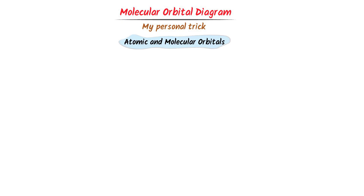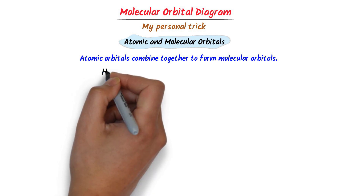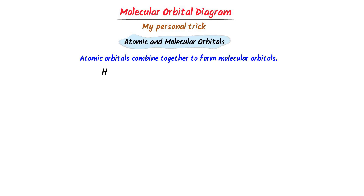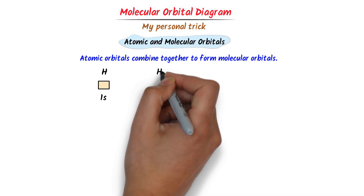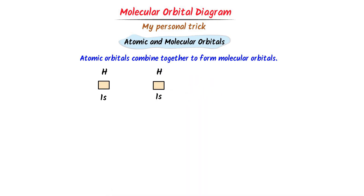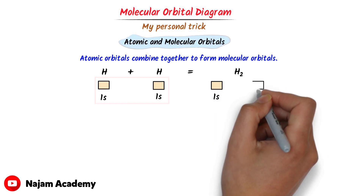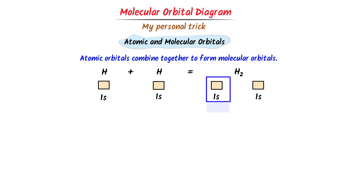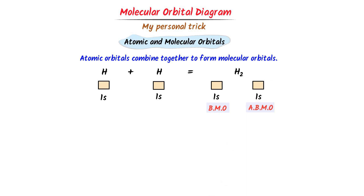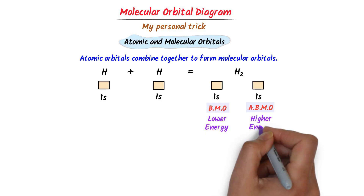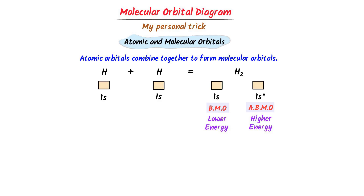According to molecular orbital theory, atomic orbitals combine together to form molecular orbitals. For example, consider this hydrogen atom — it has one atomic orbital. When two hydrogen atoms combine together, they form a hydrogen molecule, and the two atomic orbitals combine to form two types of molecular orbitals: a bonding molecular orbital and an anti-bonding molecular orbital. The bonding MO has lower energy while the anti-bonding MO has higher energy, which is why we put a star on the anti-bonding molecular orbital.